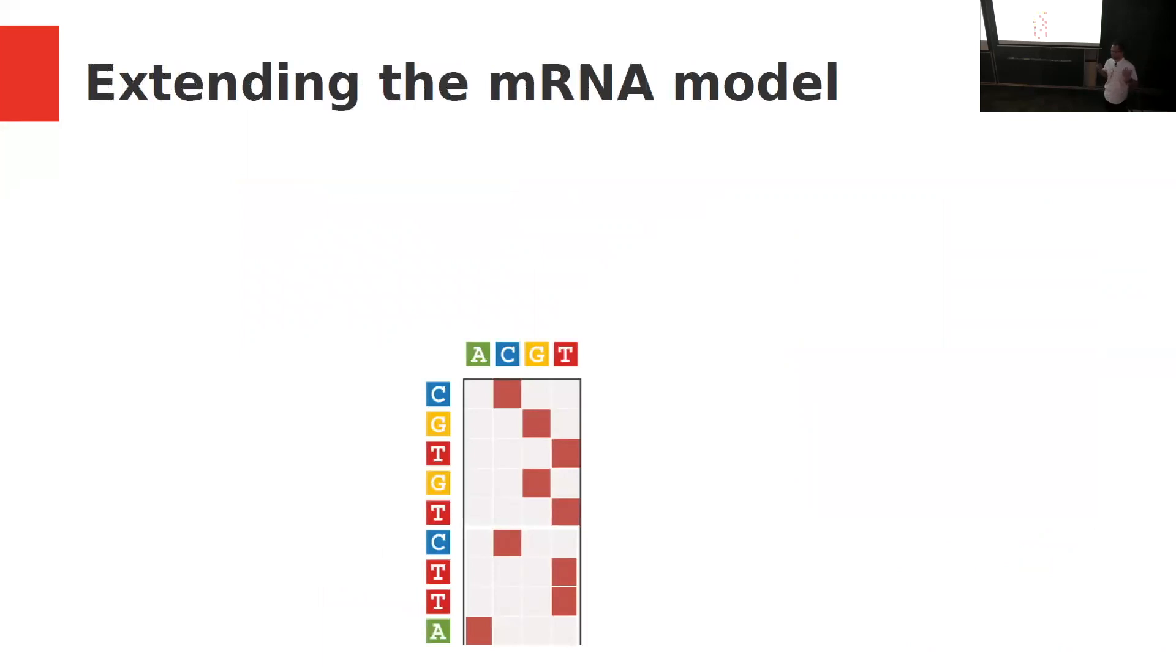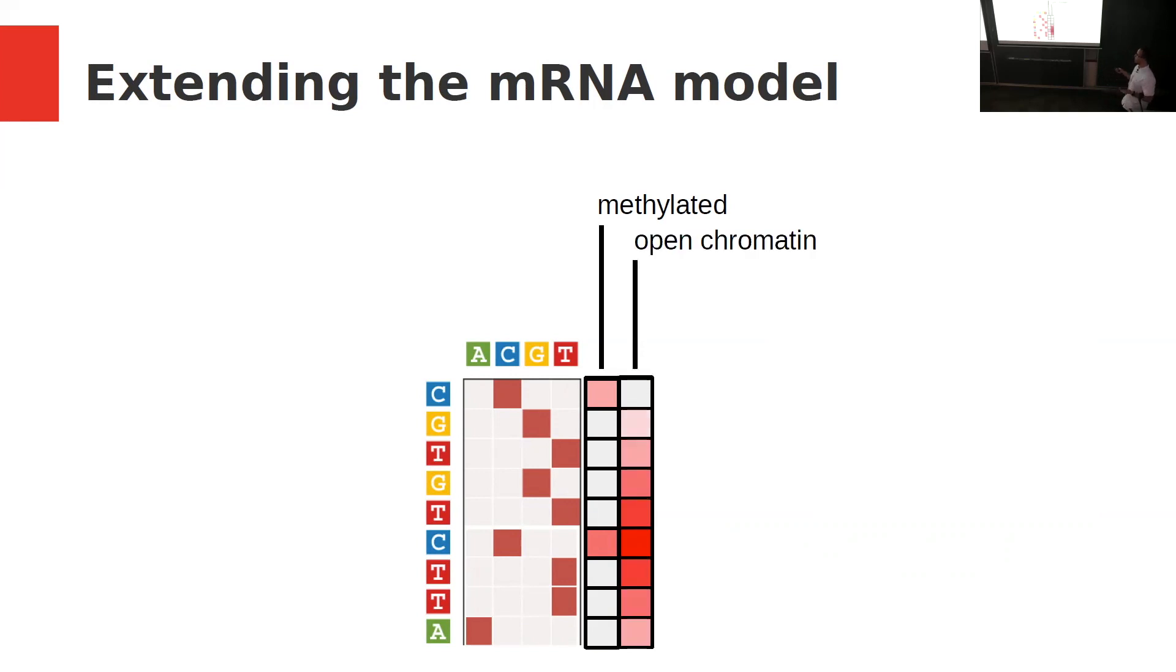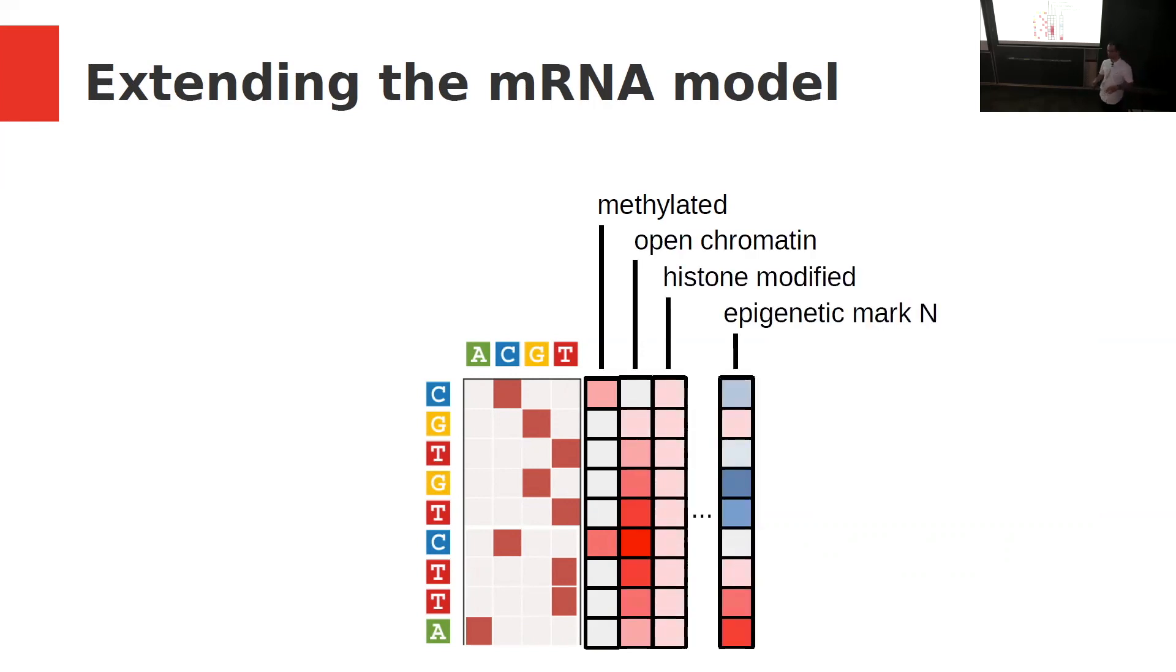Another thing I'd like to talk about is how we can possibly extend this mRNA model to generalize different tissues. We know that the DNA is the same in different tissues, but things like epigenetics can change, but the model isn't currently taking that into account. One way we can think of is by adding extra columns to this matrix that correspond to epigenetic signals that would be present and differ between tissues so that the model can learn how to predict differences in tissue expression. One example could be methylation, open chromatin signals, histone modifications, and also other epigenetic marks.